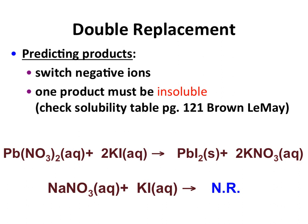To predict products for double replacement, we can switch either the negatively or positively charged ions — it doesn't matter how you choose to do it. You can look at your nitrate and iodide swapping places, or your lead and potassium swapping places. You just change partners and look at your products. Then you determine if your product is insoluble using a solubility table. In the case of sodium nitrate and potassium iodide, when these swap places, there is no precipitation based on solubility rules, so you don't get a double replacement reaction when you mix those two aqueous solutions.